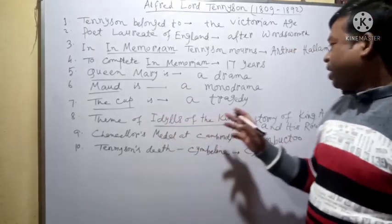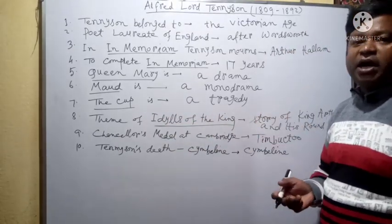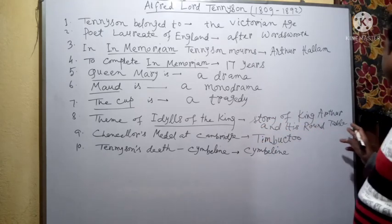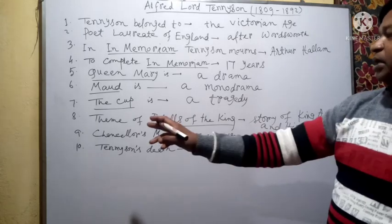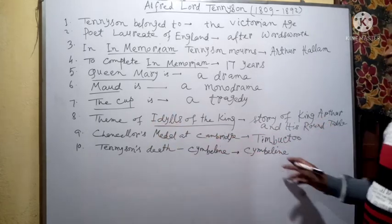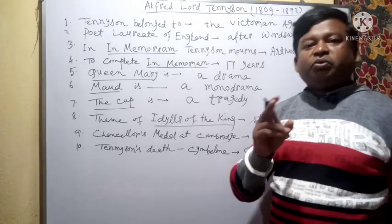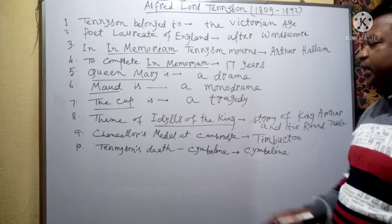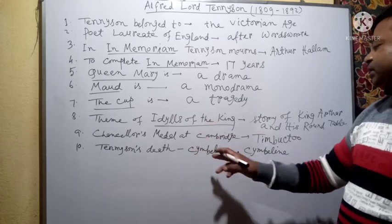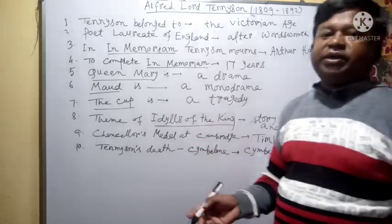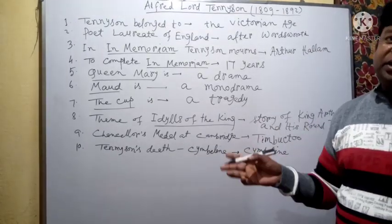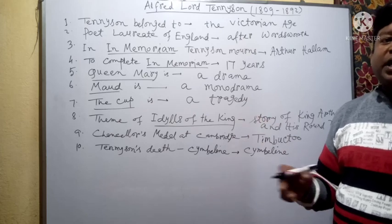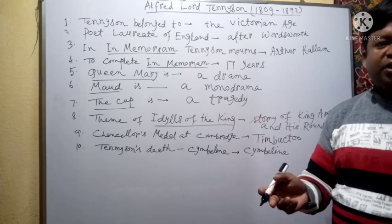8: The theme of Idylls of the King is the story of King Arthur and his Round Table. 9: The Chancellor's Medal at Cambridge — which poem of Tennyson won him the Chancellor's Medal at Cambridge? Timbuktu. 10: Tennyson's death and Cymbeline — when Tennyson died, a copy of a Shakespeare play was found lying under the cover of his bed.